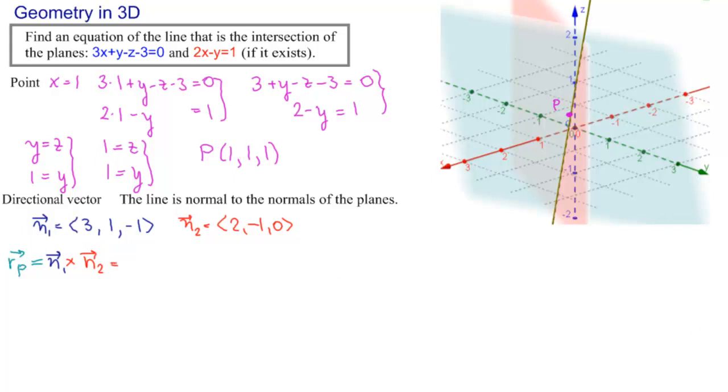Well, that is just the determinant with I, J, K, and the components. So 3, 1, minus 1, and 2, minus 1, 0. And we're just going to write directly. So this would be I, J, and K here.